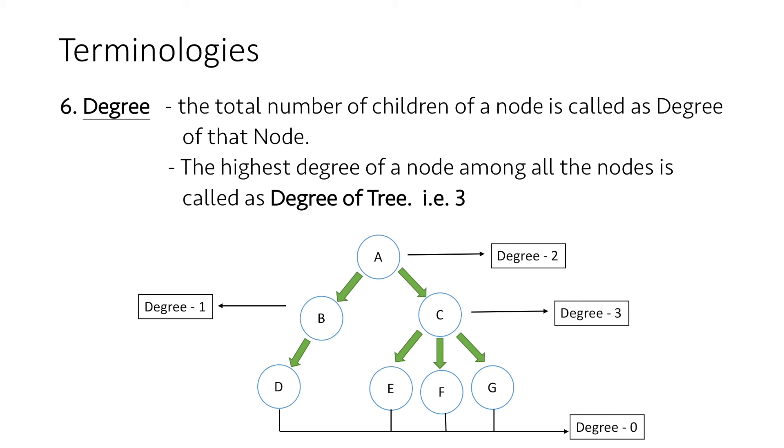One thing to remember is the highest degree of a node among all the nodes is called the degree of the tree. In our example, node C has the highest degree which is 3. Thus, the degree of the tree is also 3.